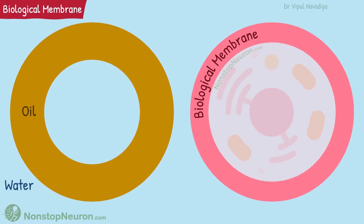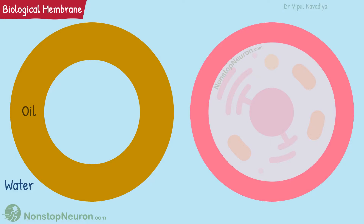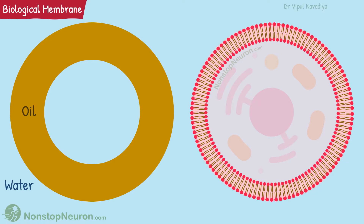The biological membrane that makes the wall of the cell is similar to this. It's also a sphere of lipid that separates inner and outer compartment. Of course, the real membrane has some differences from this simple oil. First, it's very thin — so thin that it's made up of only two layers of lipid molecules. That's why we call it lipid bilayer.